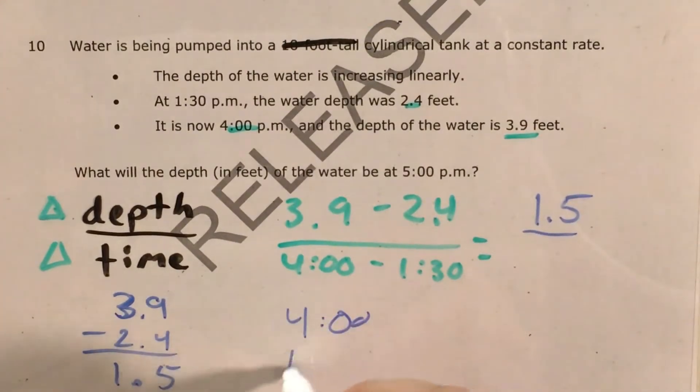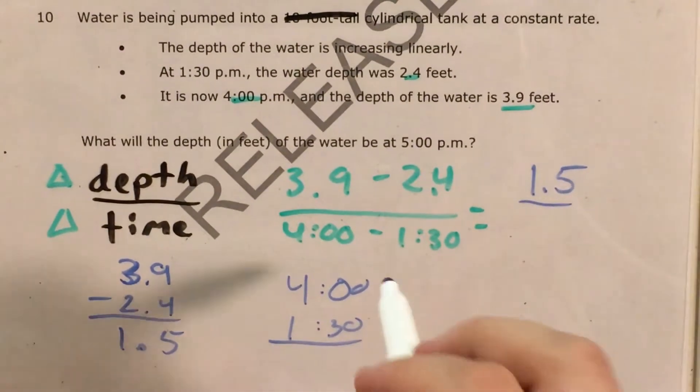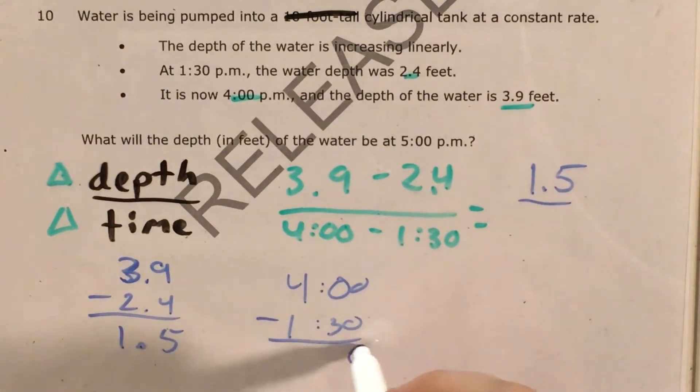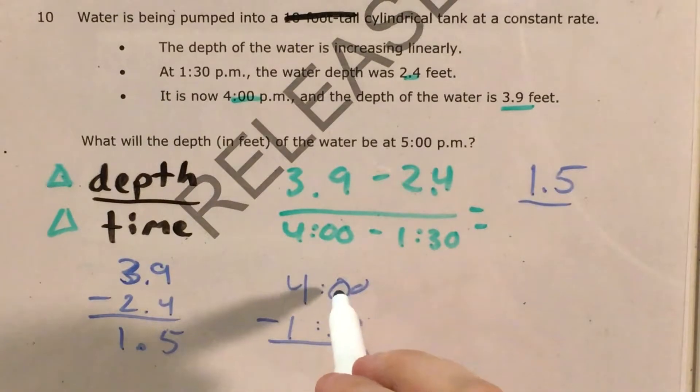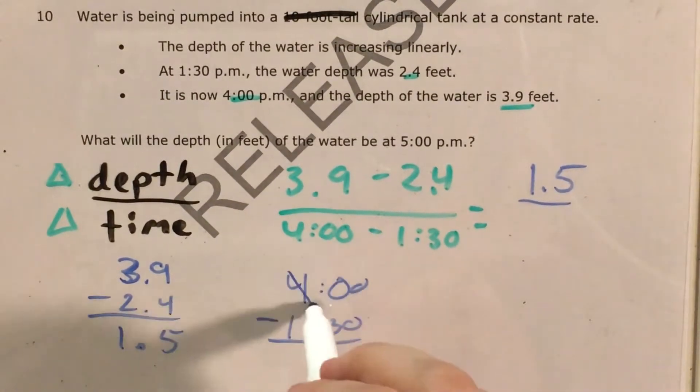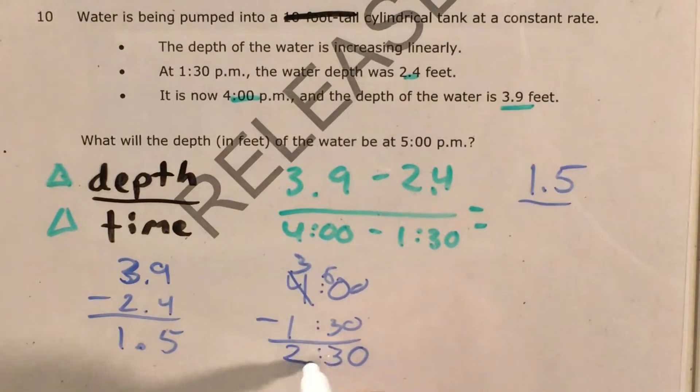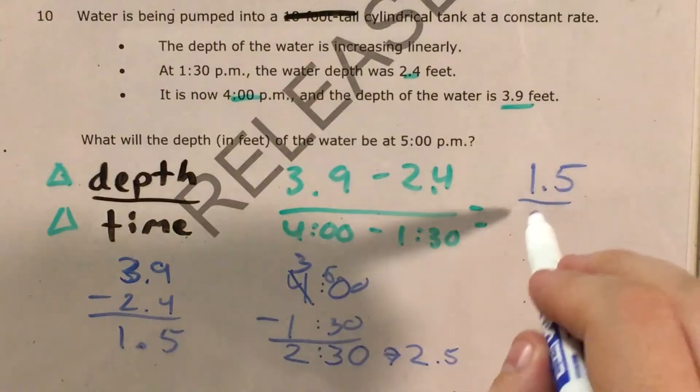And now 4 o'clock minus 1:30. This subtraction is going to be a little bit weird, but we can do it in a very similar way. 0 minus 0 is just 0. If I have 0 tens of minutes, and I want to take away 3 tens of minutes, I'm going to have to borrow an hour and turn this into 6 tens of minutes. Now 6 tens minus 3 tens gives me 3 tens. 3 hours minus 1 hour gives me 2 hours. This is 2 hours and 30 minutes, also known as 2.5 hours.